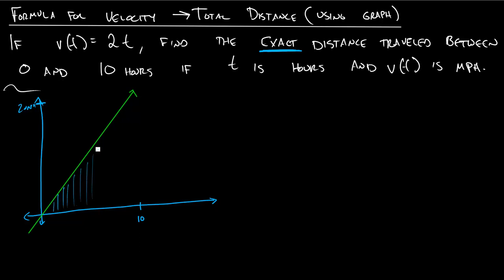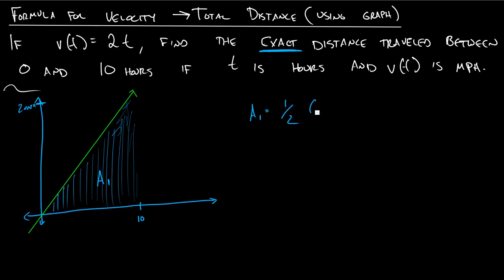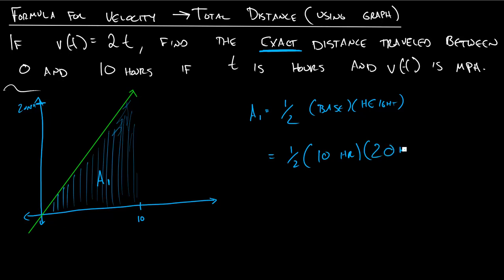To find the exact distance traveled, we find the area underneath this curve — the shaded region. That shape is a triangle, so the area is one half times base times height. The base is 10 hours and the height is 20 miles per hour — or miles over hours. When we multiply this out, the hours cancel, and we get one half times 10 times 20, which is 100 miles.